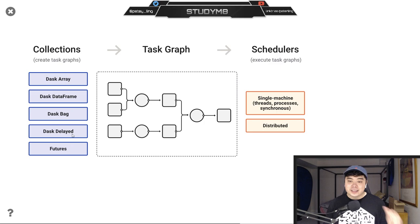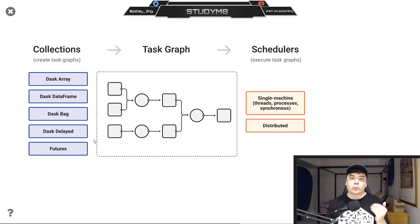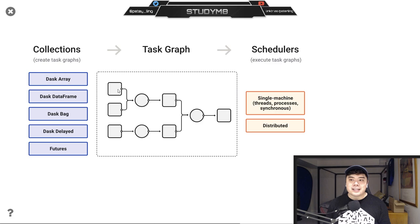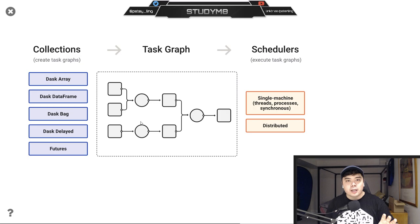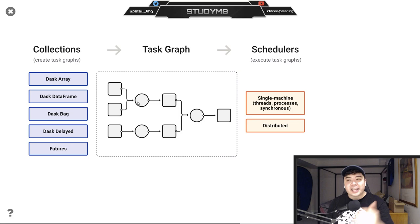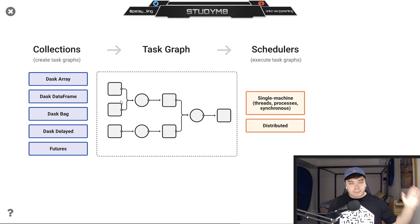What Dask delayed and futures do is that Dask does not immediately implement every single line of code as we write it. Instead it collects all the logic we're trying to implement throughout our code and creates what we see here as a task graph. Dask doesn't want to load millions of rows at every single step and computation because that would be really slow and hinder our development process. Instead, you elegantly lay out every step, tell Dask what you want it to do, and then at the very end you tell Dask to go ahead and put all the data through it and give you the result. It's just much more efficient that way.